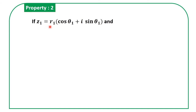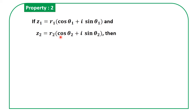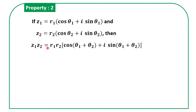Property 2: if z₁ = R₁(cos θ₁ + i sin θ₁) and z₂ = R₂(cos θ₂ + i sin θ₂), then z₁ · z₂ = R₁R₂[cos(θ₁ + θ₂) + i sin(θ₁ + θ₂)].